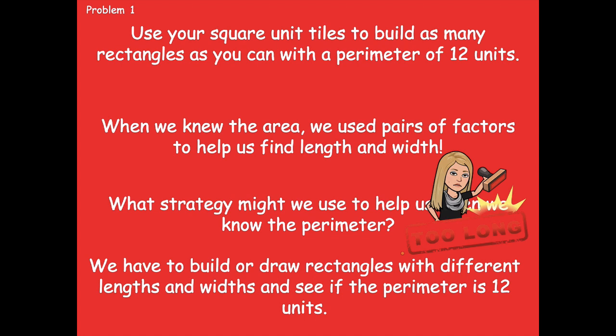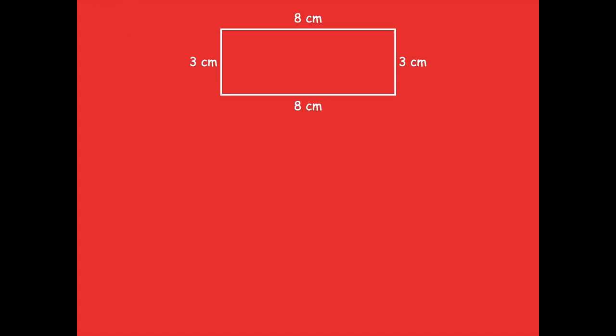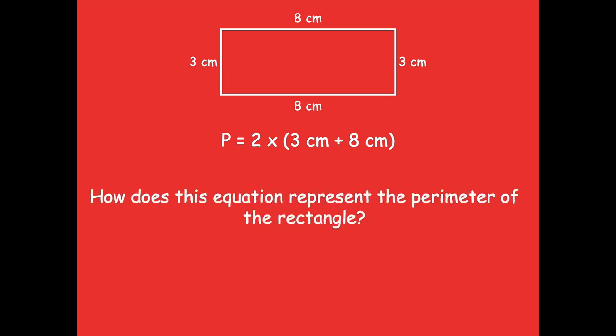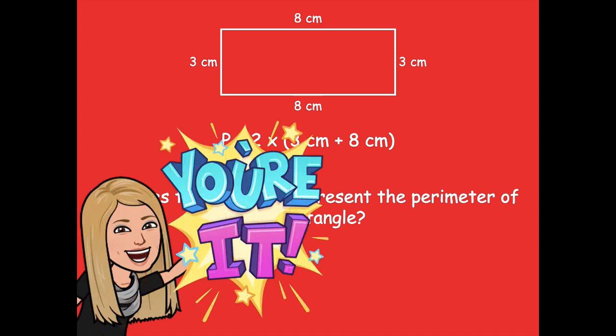Here is my rectangle — all of my side lengths are known in this one. The equation says: P equals 2 times (3 centimeters plus 8 centimeters). How does this equation represent the perimeter of this rectangle? I want you to pause and think about how that equation represents the perimeter of our rectangle, then click play when you're ready to go over it together.